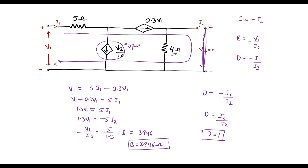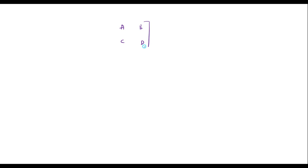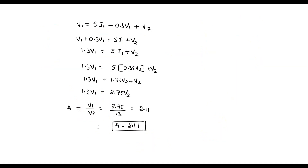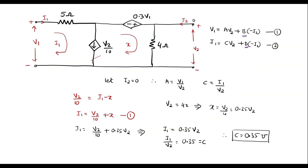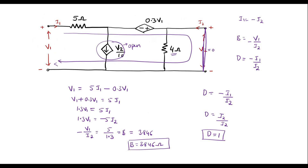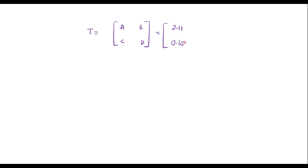Thus we have found all four transmission parameters for the given circuit: A = 2.11 (dimensionless), B = 3.846 ohms, C = 0.35 mho, and D = 1 (dimensionless). This completes the determination of the ABCD parameters. Thank you for watching.